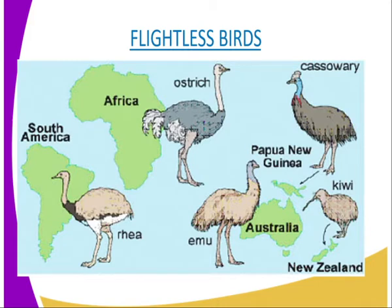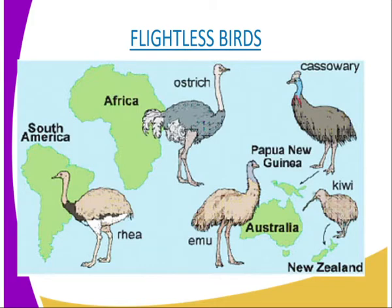Lamarck's explanation on the role of environment in directing phenotypic changes in individuals is valid. For example, a bodybuilder will have huge muscles due to continuous use of the muscles. However, it is his explanation that acquired characteristics are inherited that makes his theory unacceptable. Phenotypically acquired characteristics which do not affect the genotype of an individual cannot be inherited. That is why his theory was discredited.